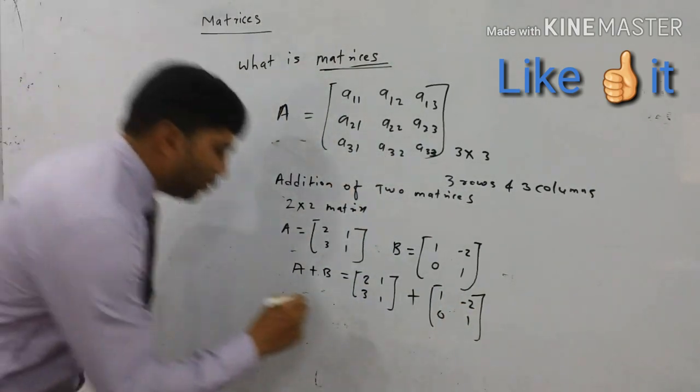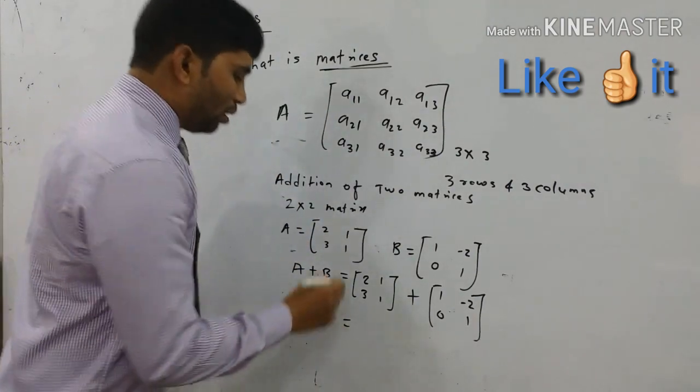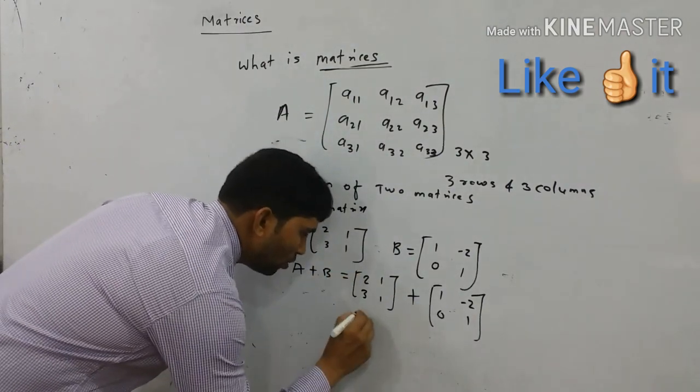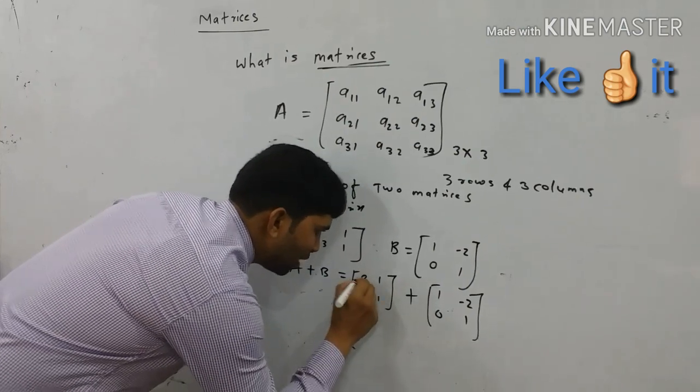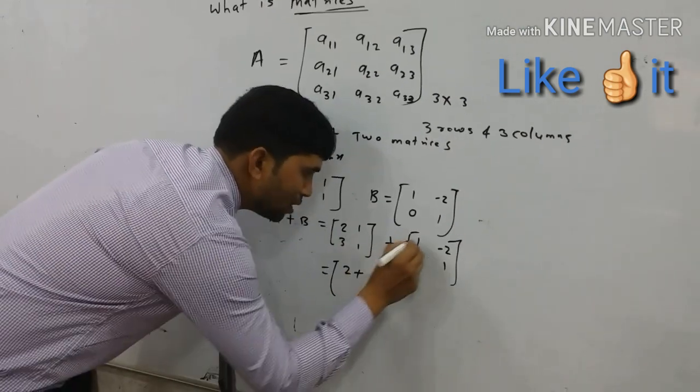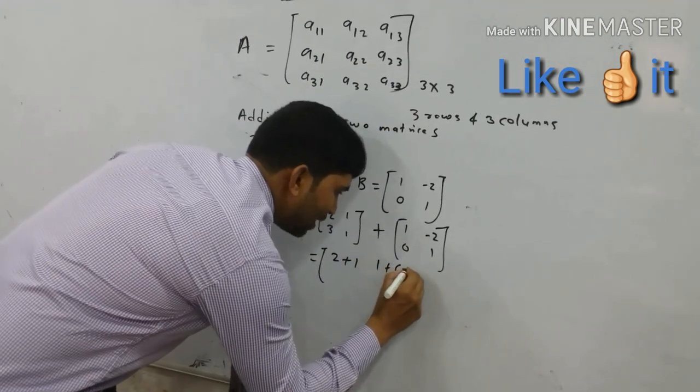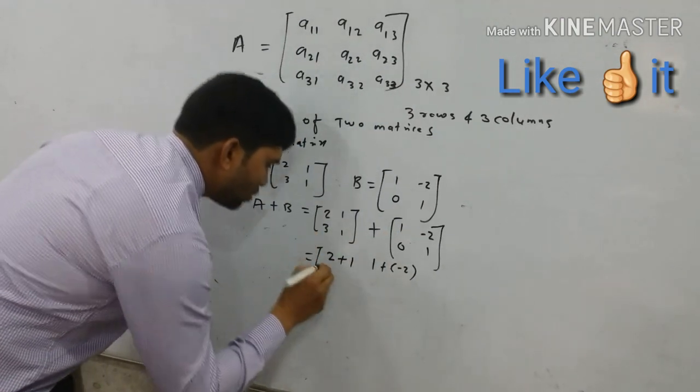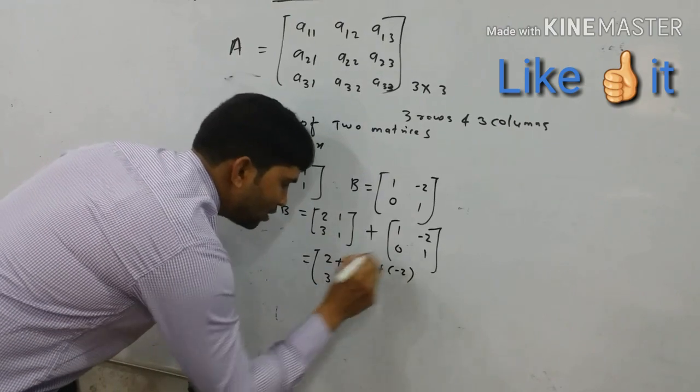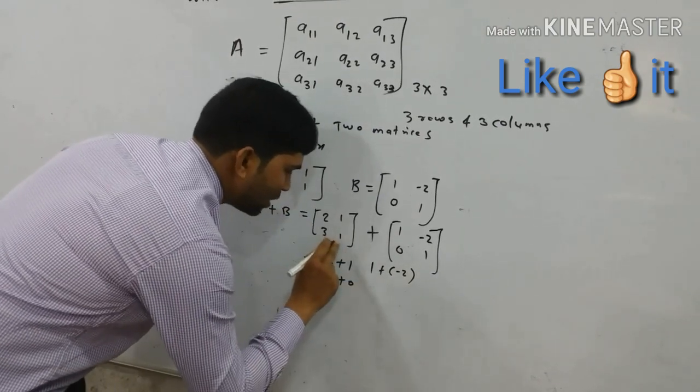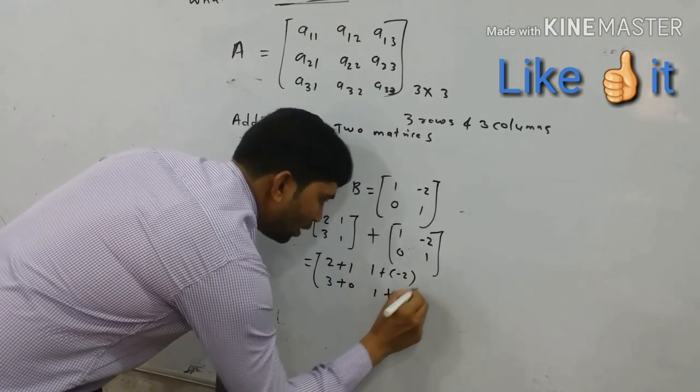Now we perform addition A plus B position wise. So we take first element 2 plus 1 here. Next, 1 plus minus 2 here. Next, we take 3 and plus 0 and next 1 plus 1.